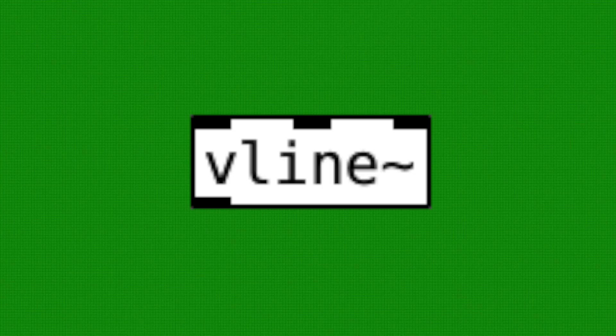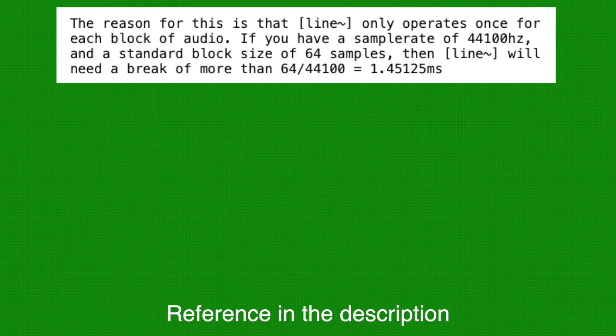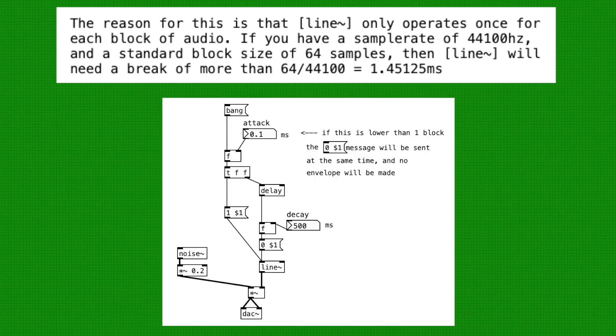One of the main differences is that vline tilde is more sample accurate. Because line tilde operates per block of audio, we cannot use very short time like 0.1 milliseconds.